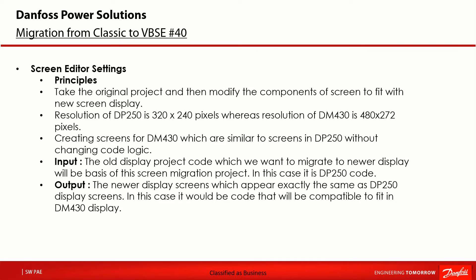The principle of my video example is to migrate a DP250 screen to a DM430 display 1-to-1. The goal is taking the original DP250 project and then modifying the components of the screen to fit the new DM430 screen display. The resolution of DP250 is 320 by 240 pixels, whereas the resolution of DM430 is 480 by 272 pixels. To have a 1-to-1 migration there will be a need to add a resolution factor for the X and Y coordinates, creating screens for DM430 which are similar to screens in DP250 without changing code logic, so the main changes will take place inside the screen editor.